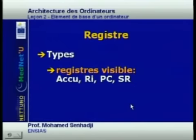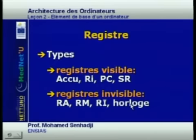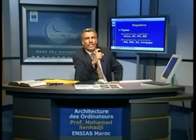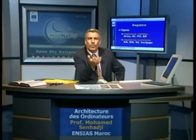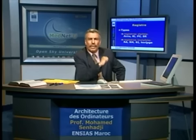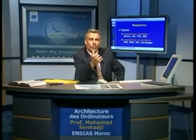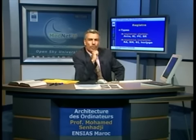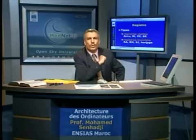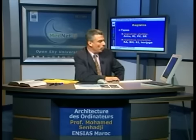There are several types of registers: visible and invisible. In the visible registers, we have the accumulator, the user registers, the program counter, and the status register. In the invisible registers, we have the address register, the memory register, the instruction register, and the clock. This terminology of visible and invisible comes from the fact that visible registers can be manipulated by the user or programmer — for example with a debugger — to view contents after each instruction. Invisible registers cannot be accessed or modified; they are used by the system only.